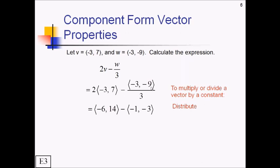You could have distributed a negative one and turned this into a plus, but I like to deal with subtraction at the very end. So now what? If you haven't already, pause the video and finish this one off. All right, so we're subtracting vectors. We're just going to do the x's and the y's separately. We've got negative six minus negative one, or plus one. And then we also have fourteen plus three, because we're subtracting negative three. And that leaves us with the final vector of negative five, comma, seventeen.